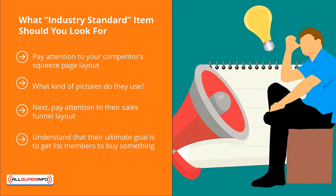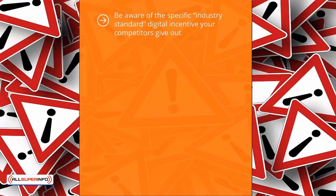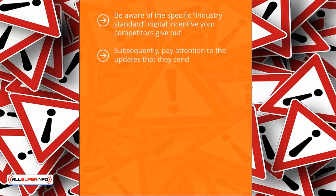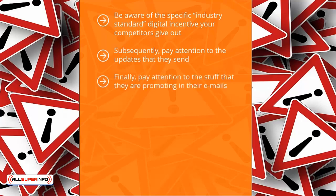Pay attention to the freebies or incentives your competitors offer to get people to sign up to their mailing list. Do they use cheat sheets, short reports, full books, special videos, or insider information? Be aware of the specific industry standard digital incentive your competitors give out — you are going to have to offer something similar to start. Also pay attention to the updates they send: do they cover news, events, or teach solutions? Identify the most common products and services they promote in their emails, as this forms the industry standard in your niche.